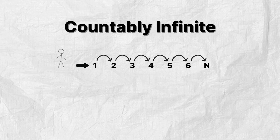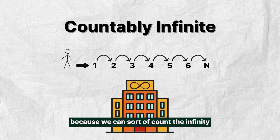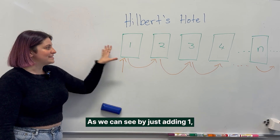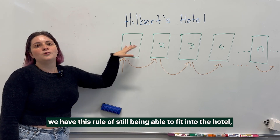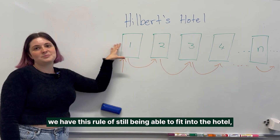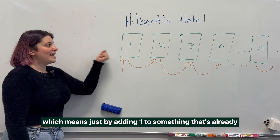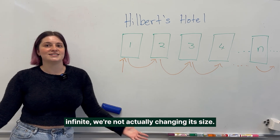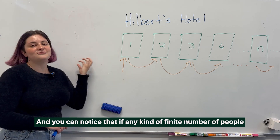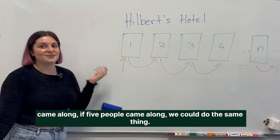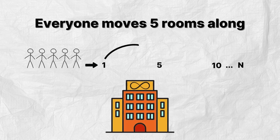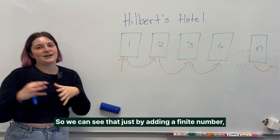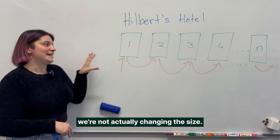We call this countably infinite because we can sort of count the infinity even though we'll never get to the end. As we can see, by just adding one we still fit everyone into the hotel, which means adding one to something already infinite doesn't actually change its size. And if any finite number of people came along — say five people — everyone just moves five along, so adding a finite number doesn't change the size either.